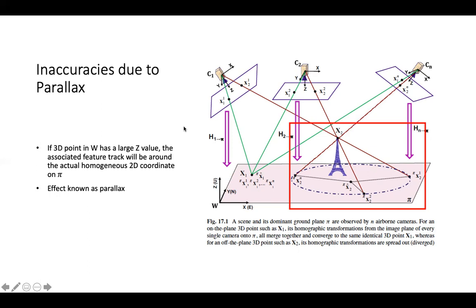Another issue that arises is 3D points that are far from the plane Pi. If the point is far away from the plane, then its feature track will also be spread out from the actual 2D homogeneous point of that 3D coordinate. This effect is also known as parallax.